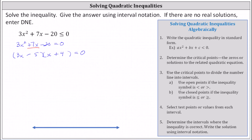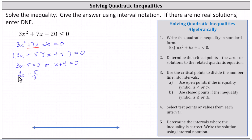To solve, the left side must equal zero, which occurs when 3x − 5 = 0 or when x + 4 = 0. Solving for x: we add five to both sides giving 3x = 5, then divide both sides by three, giving x = 5/3. For the second equation, we subtract four on both sides, giving x = −4.